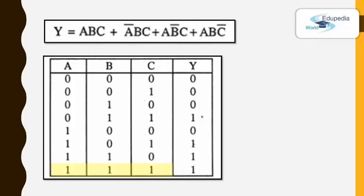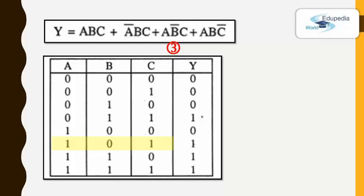Let's start with the last row — all three inputs have the value 1. According to the first group it will output 1, therefore the whole expression outputs 1. For the seventh row, input C is 0 — if we have the complement of C, then the group will give output 1. In the fourth group it uses the complement of C, so it will output 1 for row 7 and therefore the whole expression becomes 1. For the sixth row, input B is 0 — the complement of B is used in the third group, so the third group gives output 1, and therefore the whole expression gives output 1.